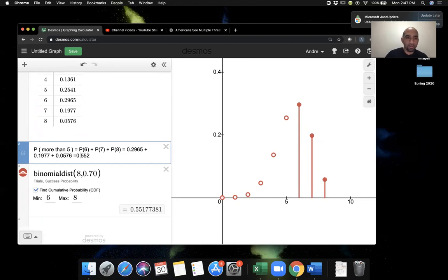So this is a nice example, I think, that shows you the capability of the binomial dist command in Desmos. You can use it to find individual probabilities, as well as to find the sum of probabilities for specific outcomes. All right, I hope you find this helpful.